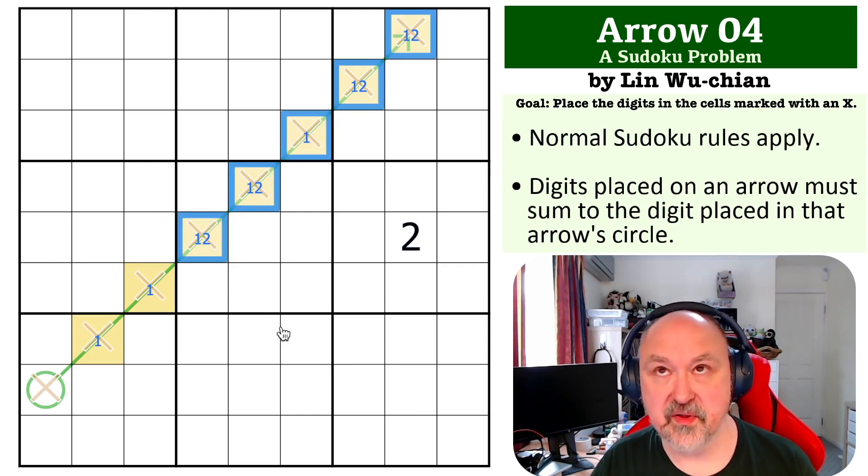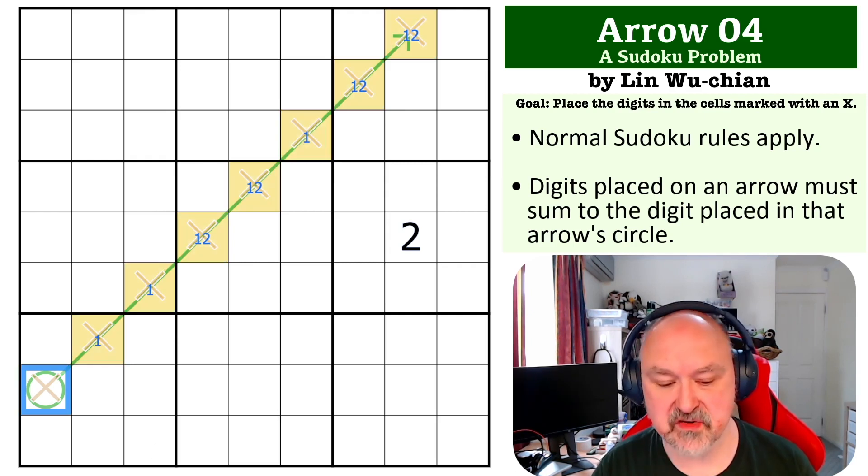we've got 3, 4, plus 3 is 7, 8, and 9. And the maximum we can put in here is 9. So we actually have to be playing with minimums.